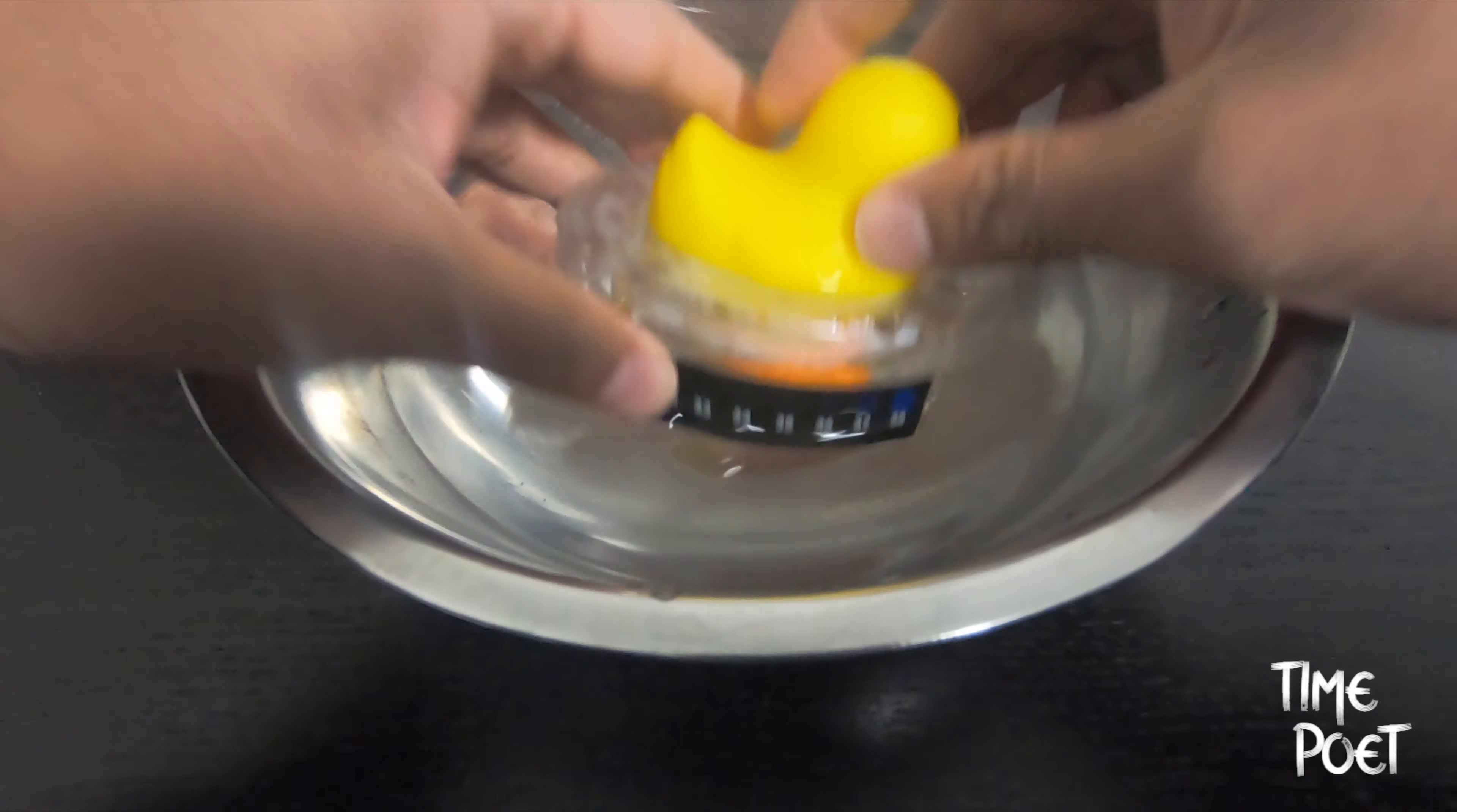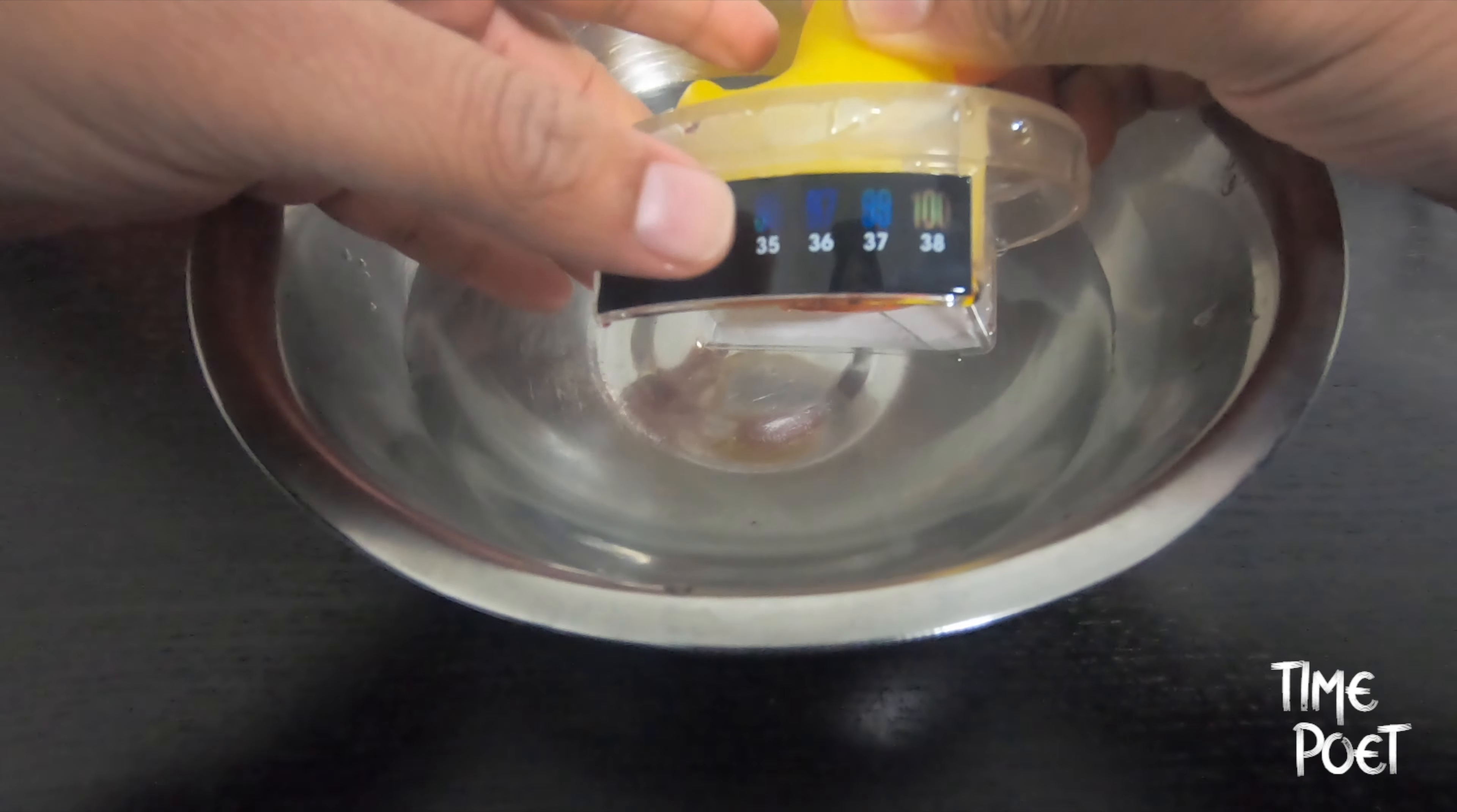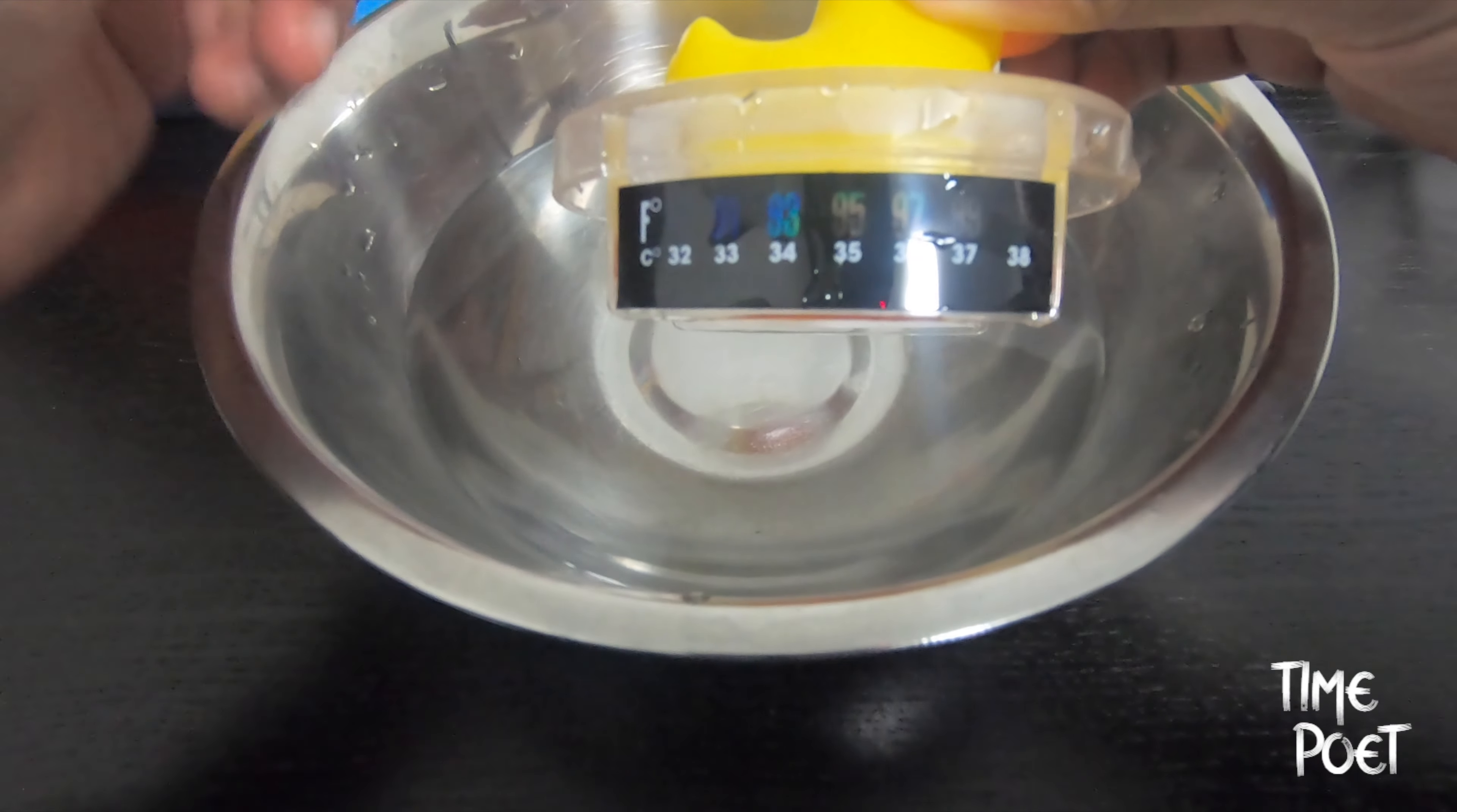In this case you can see it is 38 degrees, and when I take out the thermometer it actually slowly reduces and the color changes over to a lower temperature. Now it's showing 34, and when it goes back in it again changes color to 38.